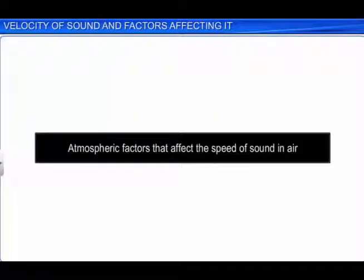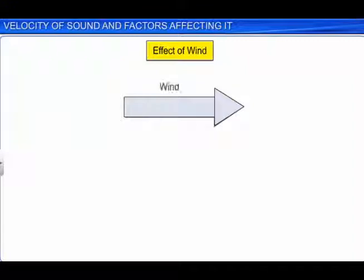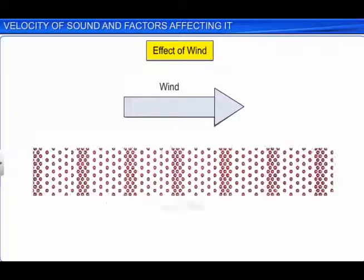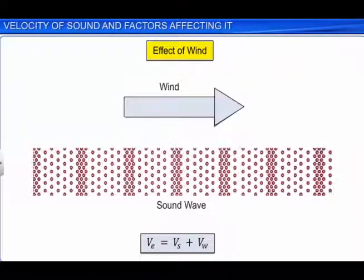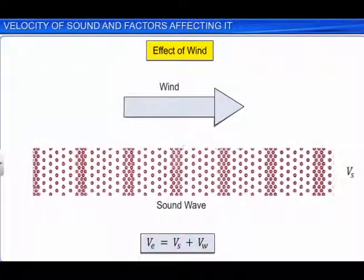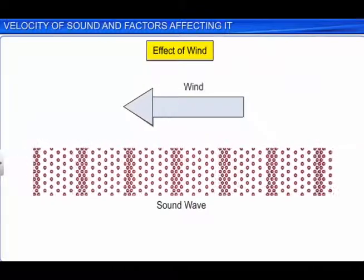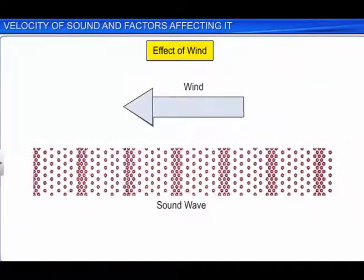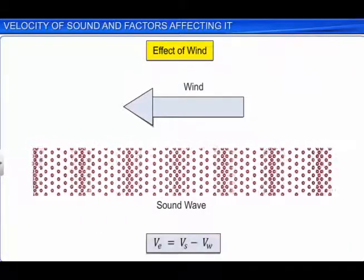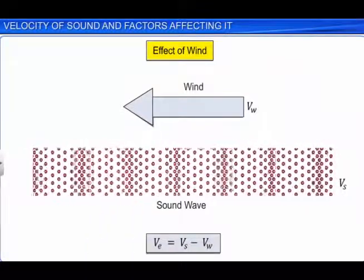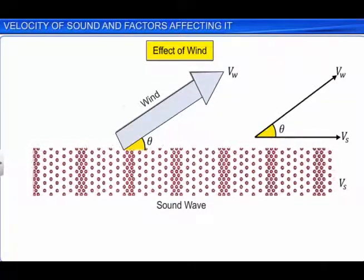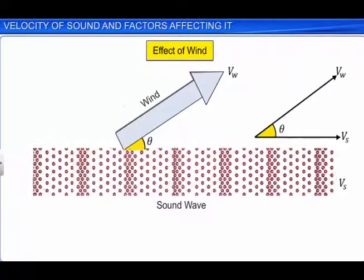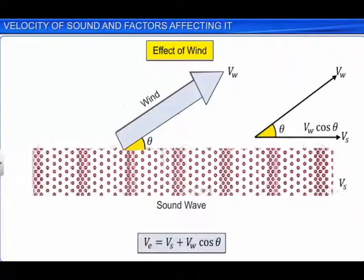Let us now look at the atmospheric factors that affect the speed of sound in air. First, let us study the effect of wind on the speed of sound in air. If wind blows in the direction of propagation of sound, then the effective speed of sound in air is equal to the sum of the speed of sound Vs and the speed of wind Vw. If wind blows in the direction opposite to that of propagation of sound, then the effective speed of sound is equal to the difference between the speed of sound Vs and Vw. If wind blows at an angle with the direction of propagation of sound, then the effective speed of sound is calculated by taking the component of the speed of wind Vw cos theta in the direction of propagation of sound.